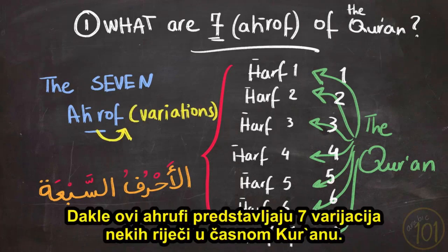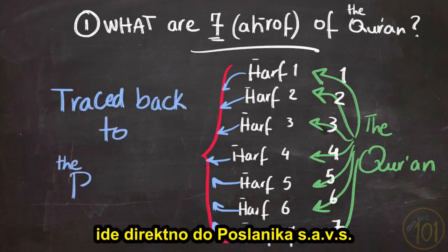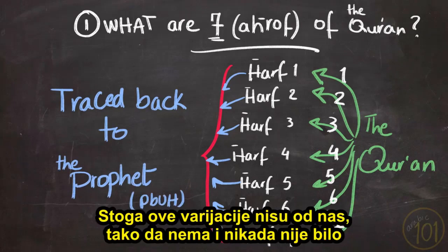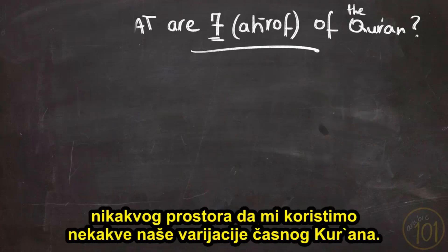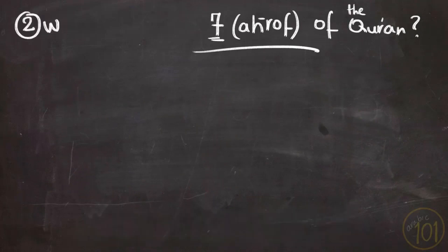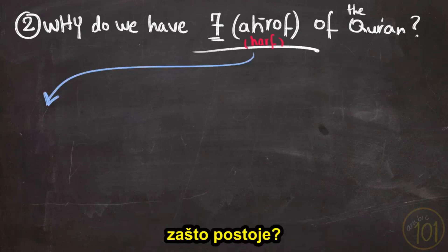These ahroof represent seven variations of some words in the Holy Quran. Each difference, no matter how minute or minuscule it is, goes directly back to the Prophet, peace be upon him. Therefore, these variations are not up to us — there is no, and has never been, any space for us to use our own variations of the Holy Quran. So why do these ahroof — and that is by the way the plural of harf — why do they exist?